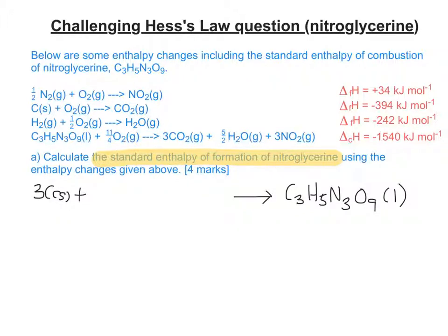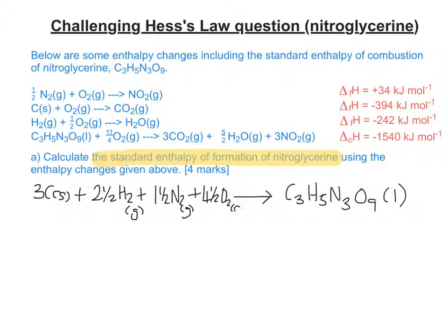Five hydrogen atoms would be 2.5 H₂. Three nitrogen atoms would be 1.5 N₂, making sure that everything has correct state symbols. And 4.5 O₂ in molecular form would make 9 oxygen atoms on the right. So if we look at the data we do have, we have combustion data for carbon, for hydrogen, and for nitrogen.